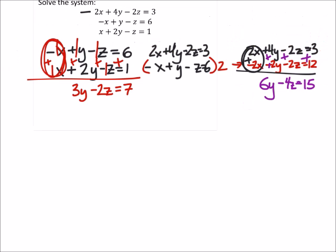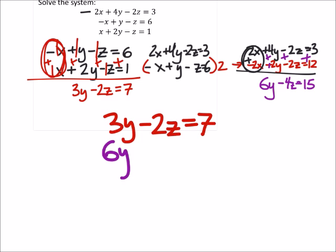So let's compare these two equations. The red one. 3y minus 2z equals 7. And 6y minus 4z equals 15. So which variable do we want to eliminate? Z. Let's eliminate Z.